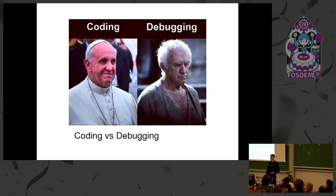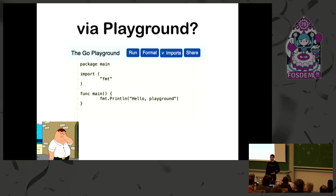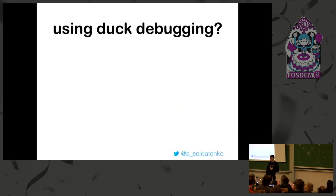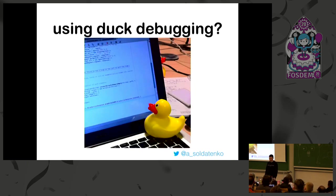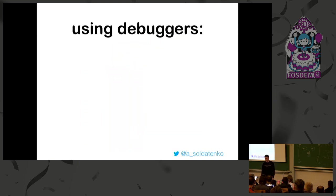Another idea - testing. Or Go playground: you can just copy your program, run it, and see the results. But that's not really debugging. I also usually ask myself line by line how the code is evaluated. But if we switch to more serious stuff, we can use debuggers.